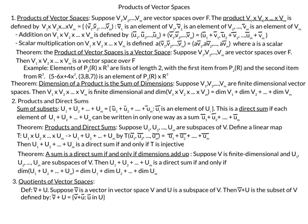The dimension of a product is the sum of dimensions. Suppose V1, V2 up to Vm are finite dimensional vector spaces. Then V1 cross V2 cross up to Vm is finite dimensional, and the dimension of the product equals the sum: dimension of V1 plus dimension of V2, up to dimension of Vm.